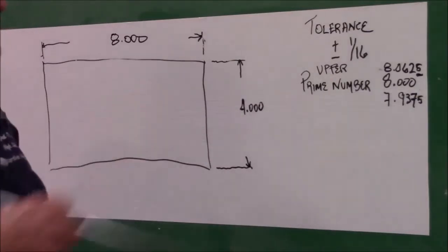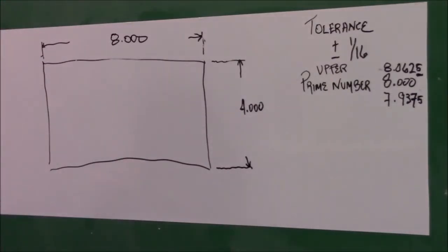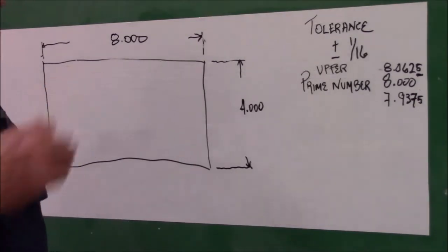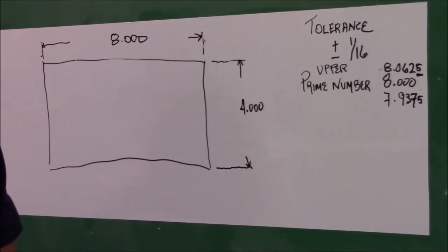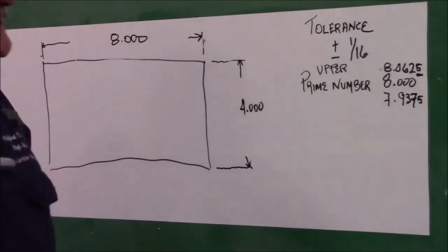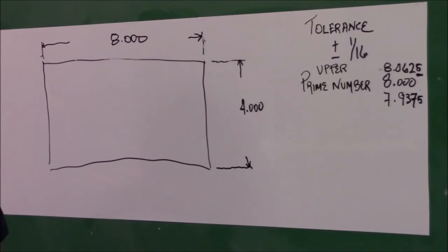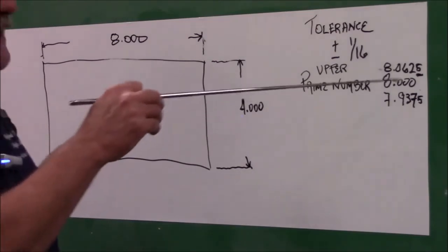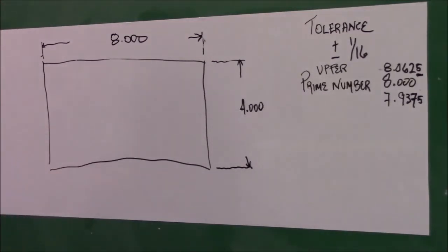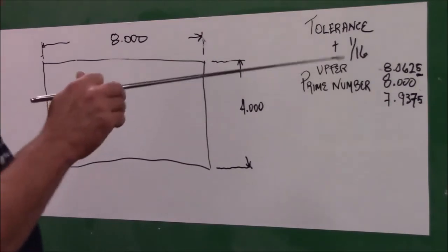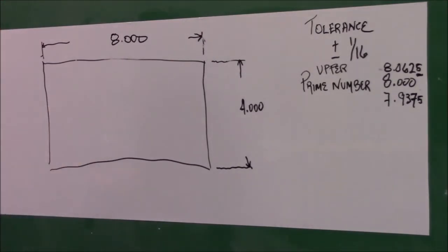So our prime number for the length is eight inches. The eight inches, of course, has the equivalent of decimal fraction. The upper tolerance that you can go as far as is eight inch, sixty-two and five ten-thousandths. Now we are not going to talk too much about the last number, the five, but you need to know that that sometimes goes into play depending on the size of your tolerance. So since our tolerance is a sixteenth, it's a sixty-two and five ten-thousandths, that's your upper level that you could go to.